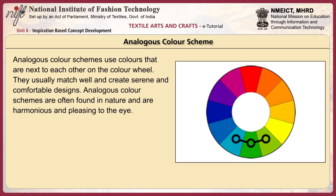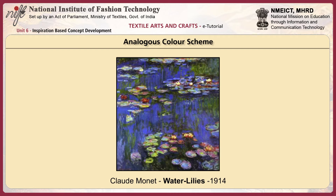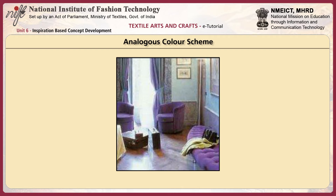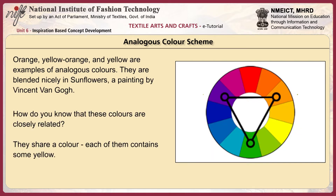Analogous color schemes use colors that are next to each other on the color wheel. They usually match well and create serene and comfortable designs, and are often found in nature, being harmonious and pleasing to the eye. Make sure you have enough contrast when choosing an analogous scheme — choose one color to dominate, a second to support, and use the third along with black, white or grey as an accent. Orange, yellow-orange and yellow are examples of analogous colors, blended nicely in sunflowers, a painting by Vincent van Gogh. They share a color — each contains some yellow.